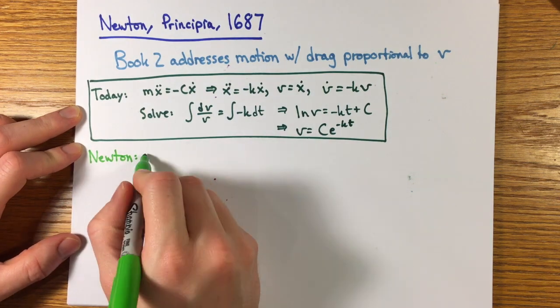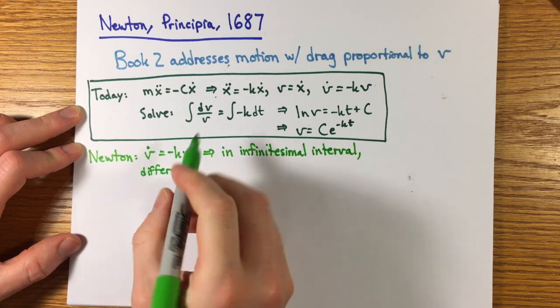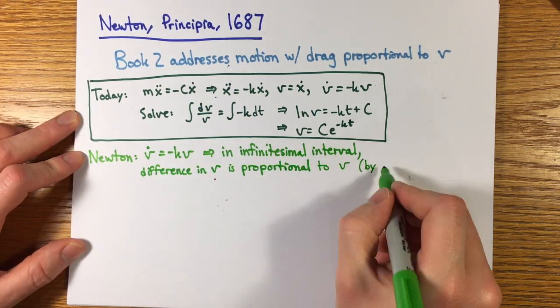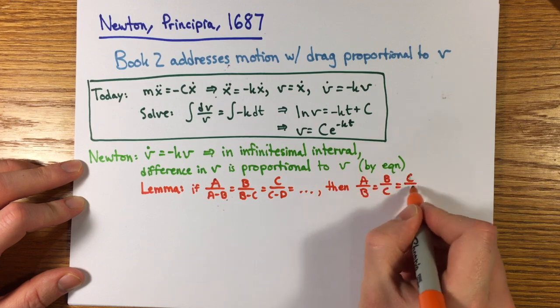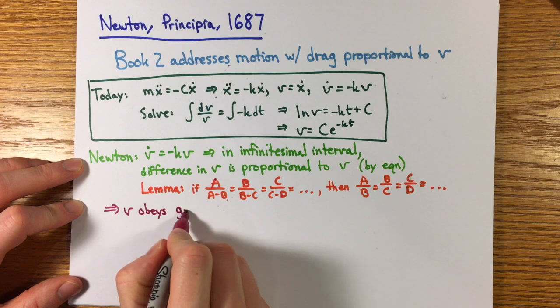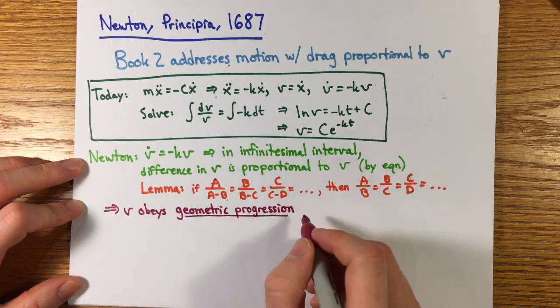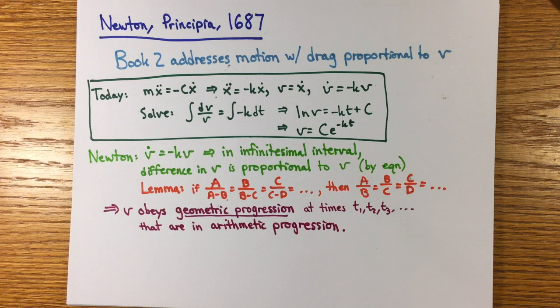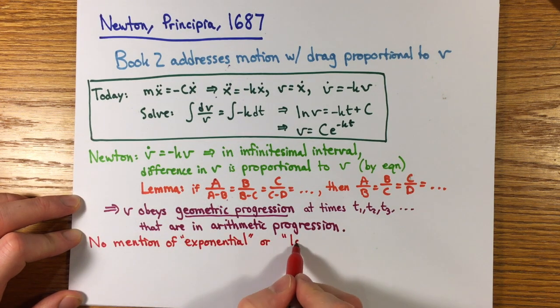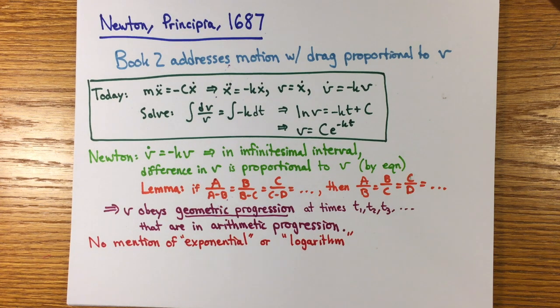Newton's account is very different. In his view, the equation v dot equals minus kv means that in each of any number of very small equal increments of time, the change in velocity is proportional to the instantaneous velocity. Since you can show that if a sequence of values A, B, C, D is in constant proportion to their differences, they are proportional to each other, the velocity must obey a geometric progression in equal intervals of time. This is actually the same argument that Napier gave 70 years earlier when introducing the logarithm. But at no point does Newton use terminology or notation for the exponential or the logarithm. He does mention how the velocity and time are related to the lengths on the x-axis and areas under the graph of a hyperbola defined by those lengths as discovered by St. Vincent in the 1640s, more on him later.